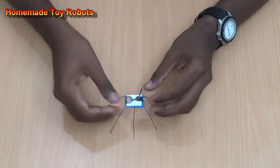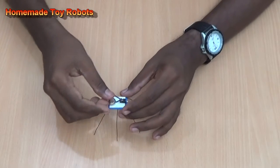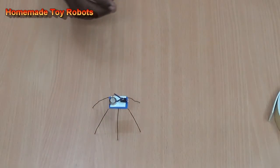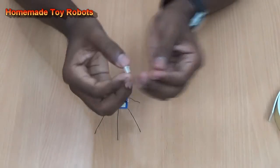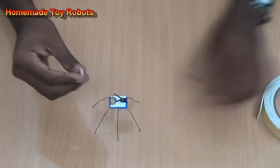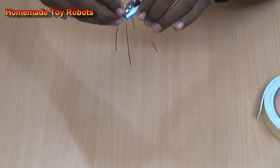Then place another wire using the double sided tape. Connect it like this.